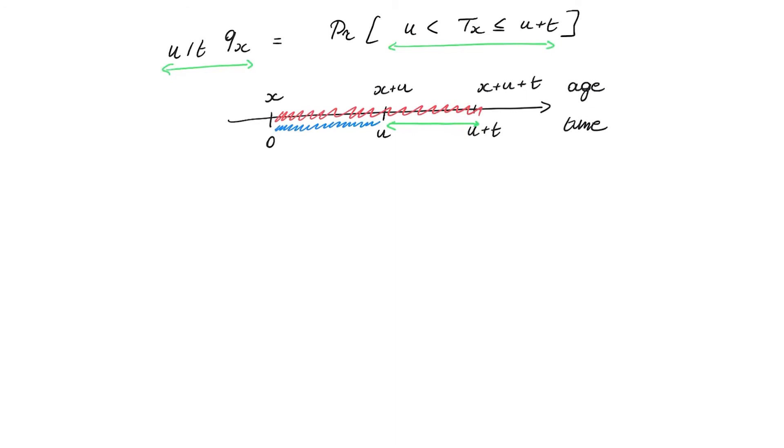I retrieve it by looking at the events connecting to the red line minus the events connecting to the blue line. So what I retrieve then is that's the probability that T_x is below or equal to u plus t minus the...